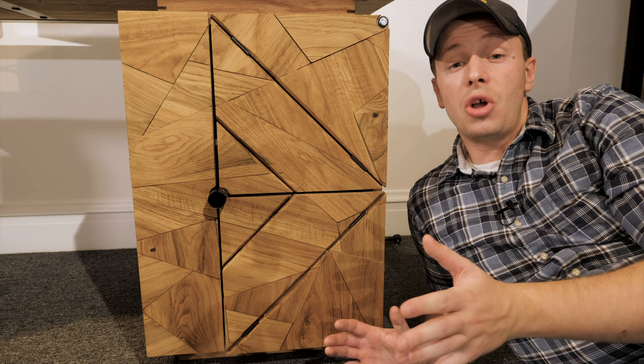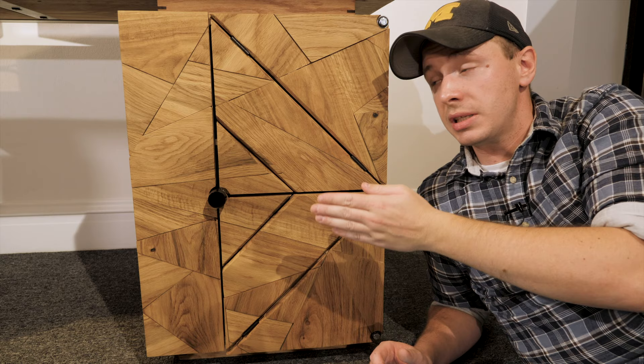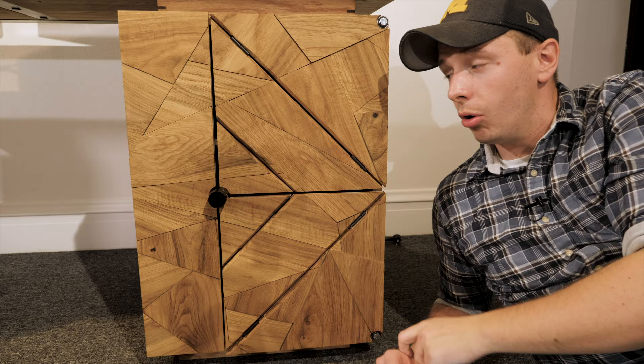This whole thing looks pretty busy, but it's actually just a piece of half-inch plywood with a bunch of white oak pieces put on top in a mosaic pattern. The way these squares break down is that there's this large right triangle, this trapezoid here, and a small right triangle.